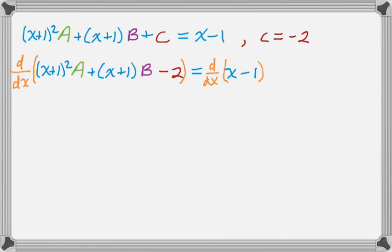So I've got that. And what I will do from there is simplify that. So I get 2 of the quantity of x plus 1 A plus B. And then the derivative of negative 2 is 0. And then on the right hand side I just have 1. And now actually if I let x equal negative 1, I would get b equals 1.